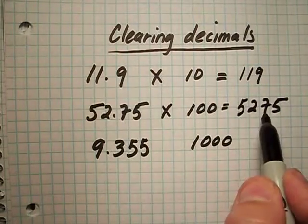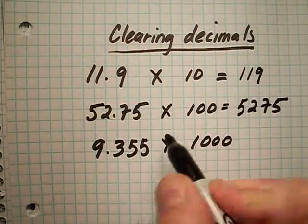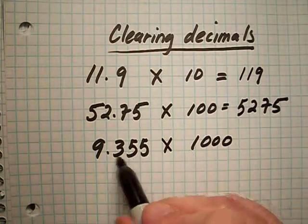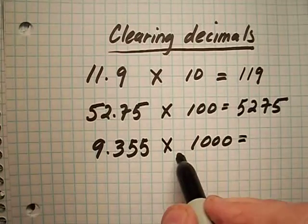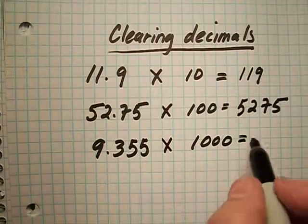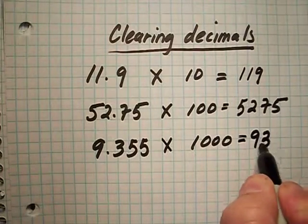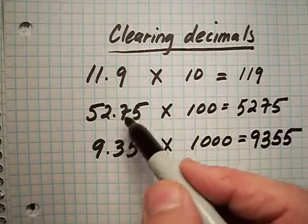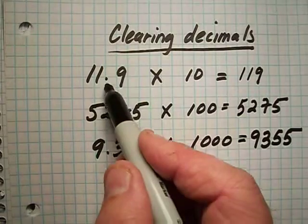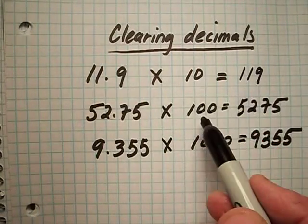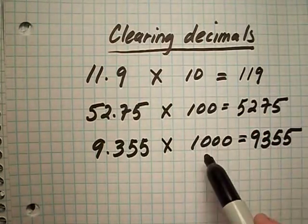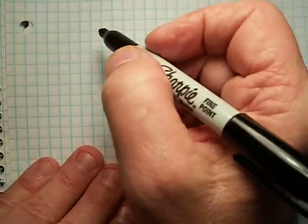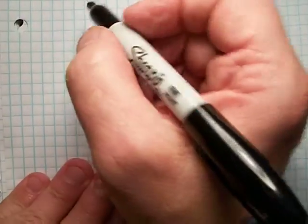So you've cleared your decimal. And finally, 9.355 is three digits away from your decimal — you multiply by one thousand to clear the decimal, and it would be 9355. So it's important to know how many digits are away from your decimal: tenths, hundredths, or thousandths.